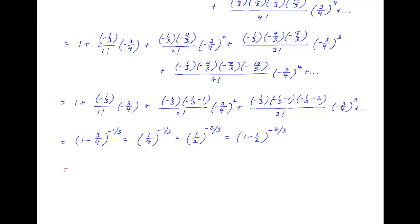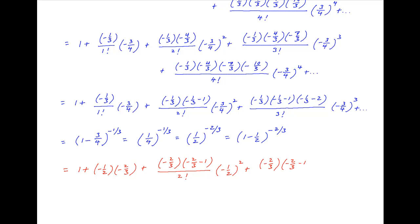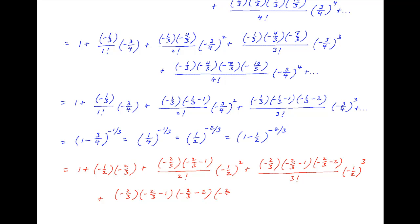This can be written as (1 − 1/2) raised to the power (−2/3). Using binomial expansion, this can be expressed as 1 plus (−1/2) times (−2/3), plus (−2/3)(−2/3 − 1) upon 2 factorial times (−1/2) squared, plus (−2/3)(−2/3 − 1)(−2/3 − 2) upon 3 factorial times (−1/2) cubed, plus (−2/3)(−2/3 − 1)(−2/3 − 2)(−2/3 − 3) divided by 4 factorial times (−1/2) to the power 4, plus and so on.